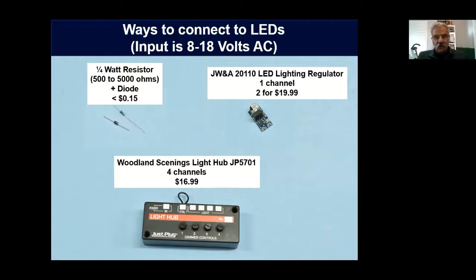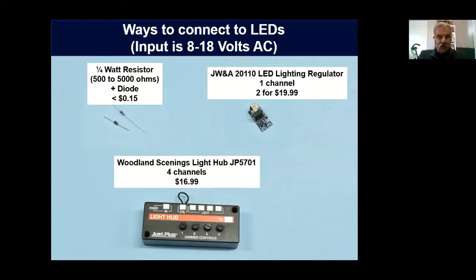There are a couple of things that make your life easy. One is the JWNA LED lighting regulator. It takes AC anywhere from 8 to 18 volts. Each lighting regulator is one channel, but you get two of them for $19.99. The AC connects up here, the DC connects here, and there's a miniature potentiometer that varies the intensity of the light. This is particularly useful for things like passenger car lighting where you want to vary the light, or a single set of lights where you want to vary the intensity.